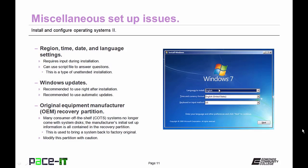Then there's Windows Update — it's recommended that you run Windows Update right after installation to make sure everything is current, and then automate updates going forward. The last thing to consider is the OEM recovery partition. Many consumer off-the-shelf systems no longer come with system disks; it's all contained in the recovery partition, which is used to bring a system back to factory original — including all the default programs. Use caution when modifying that partition.